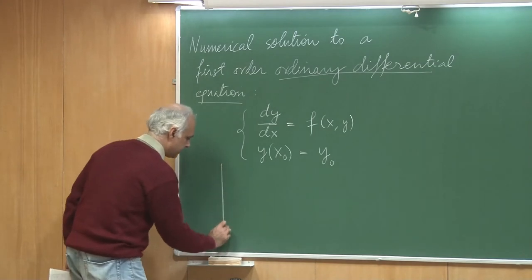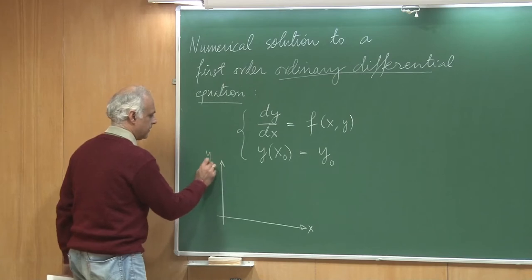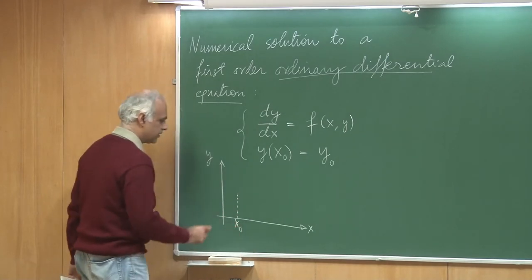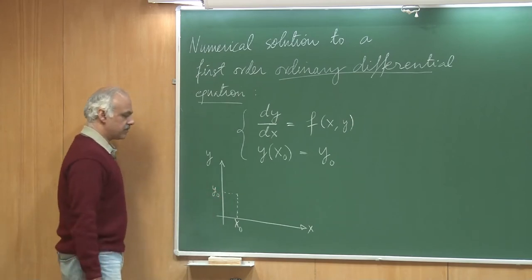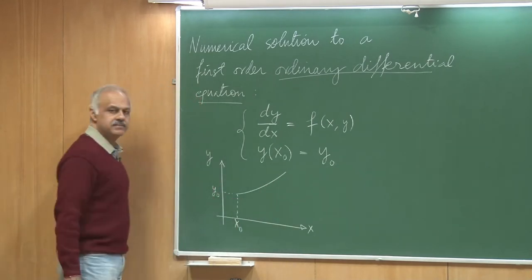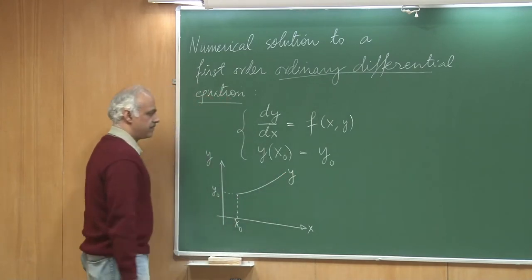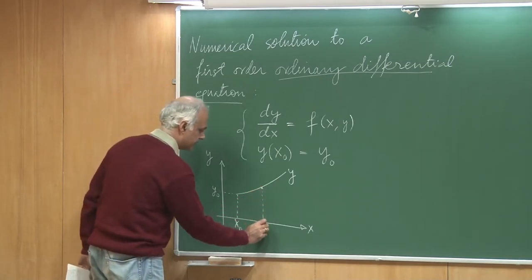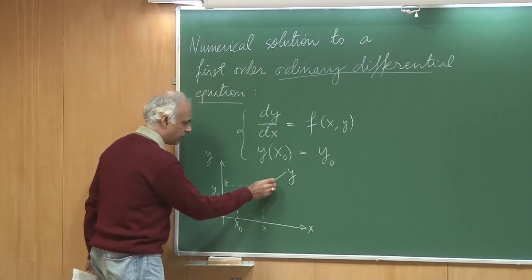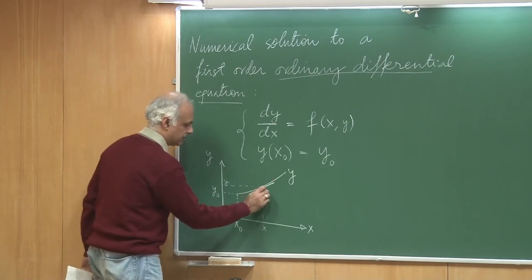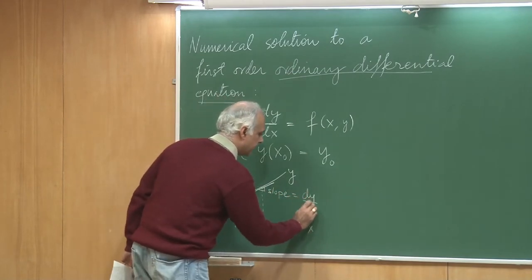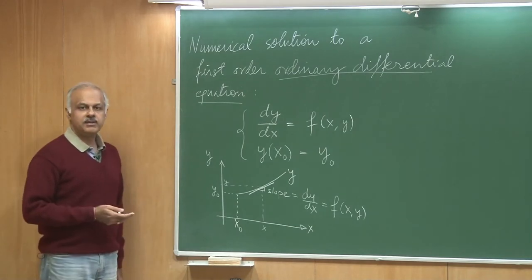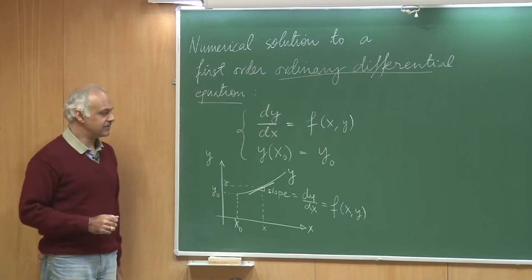Let me draw a picture. That is my x-axis, that is my y-axis. I will mark x₀ here, and the value there is y₀, and my function may look something like this. This is my function y, and then the slope of this at any point x, y is dy/dx, and this is given as f(x, y). So the problem is very simple: given the slope, I need to calculate what the function itself is.